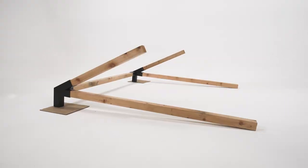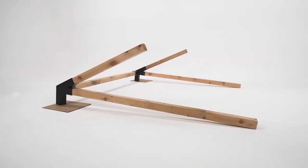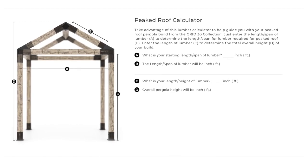To find the proper measurement for the shorter angled lumber, you can use our online calculator found on the Grid 30 product pages.